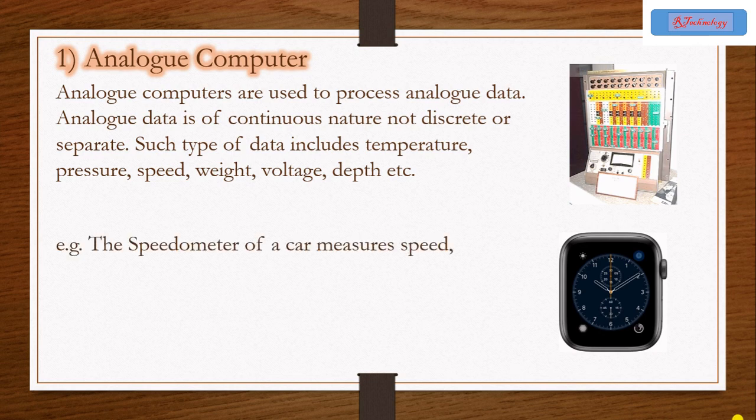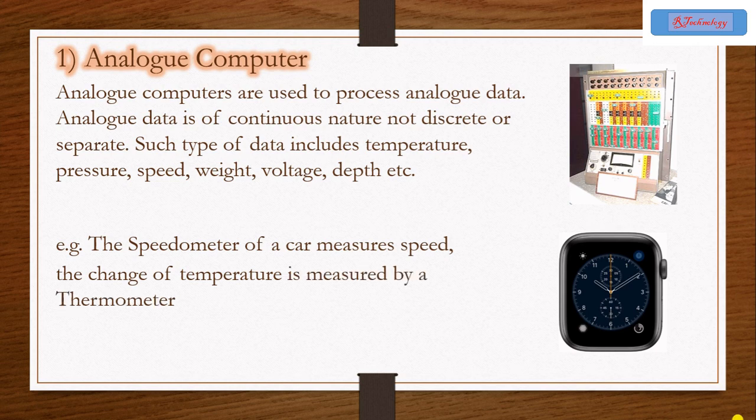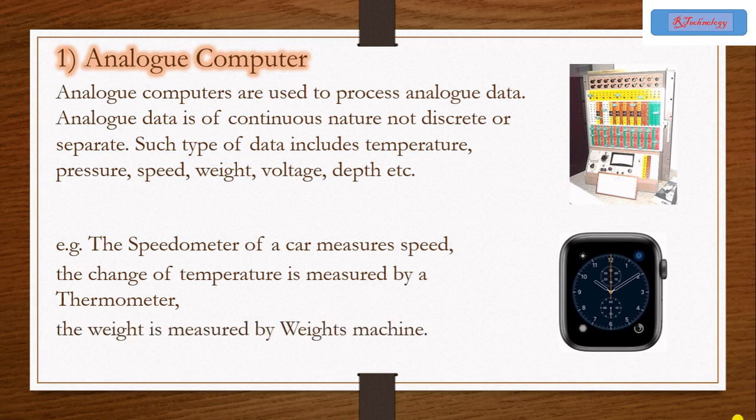For example, the speedometer of a car measures speed. The change of temperature is measured by a thermometer. The weight is measured by a weight machine. These all are the examples of analog computer.